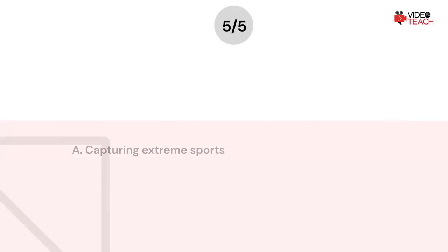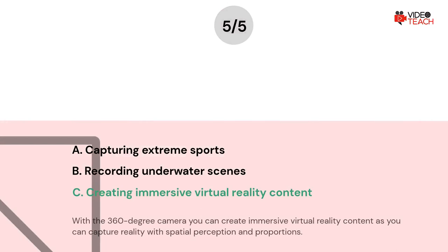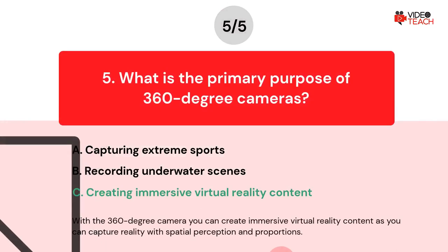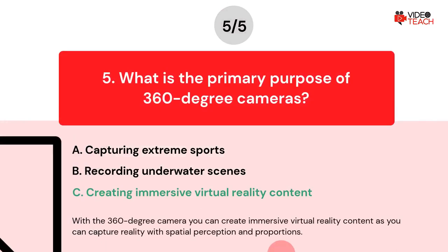The correct answer is Option C. With a 360 degree camera, you can create immersive virtual reality content, as you can capture reality with spatial perception and proportions.